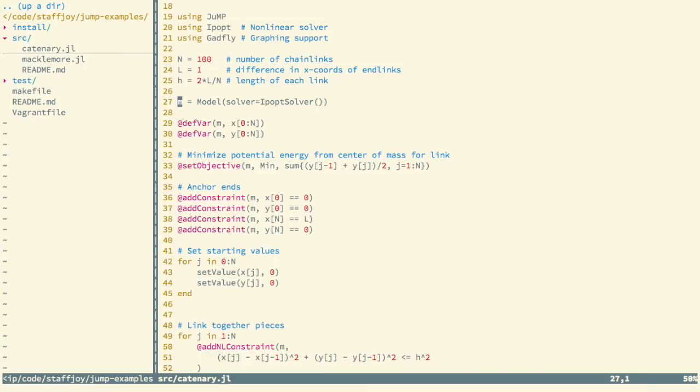Then we define our decision variables. It's worth pointing out that because we have 100 individual pieces of chain, that means we're going to need 101 x-coordinates and 101 y-coordinates because we're defining the left and right side of each one rather than the individual chain links.